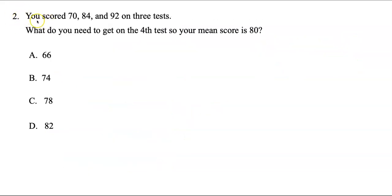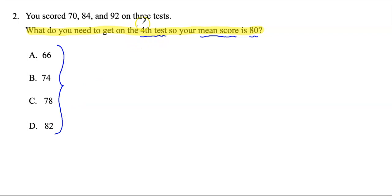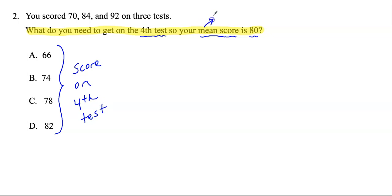Question 2. You scored 70, 84, and 92 on three tests. What do you need to get on the fourth test so your mean score is 80? The answer choices represent the score on the fourth test. The word mean indicates average — sometimes the GED test will say mean, other times average; they indicate the exact same thing.